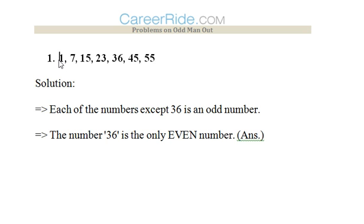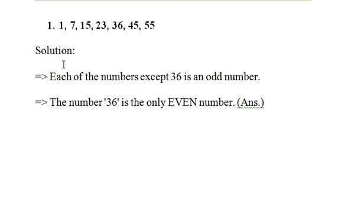Now the first question: 1, 7, 15, 23, 36, 45, and 55 are given. We need to find out a number which stands out of the crowd. Each and every number we can see here is an odd number other than 36. So 36 stands out of the crowd. This would be the odd one out. This was an easy one.